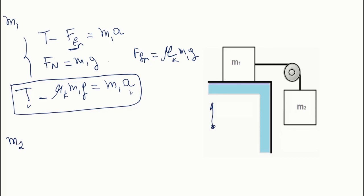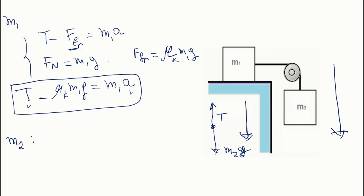For M2, we have tension T and weight M2·G. The motion is downward, so forces in the direction of motion are positive and forces against it are negative. Therefore: M2·G minus T equals M2 times acceleration. The acceleration of object 1 and object 2 are identical because the two objects are connected to each other — they will have the same acceleration.